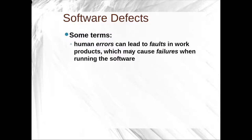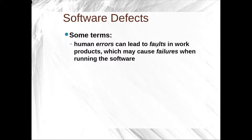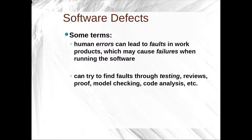Let's talk about software defects. Software defects can be described using many terms. Human errors can lead to faults in work products, which may cause failures when running the software. An error is something I make — it can lead to a deficiency, which can be a fault in the work I produce. This fault can induce failure. For example, an error could be assuming a variable is not null, leading to a fault where the assumption is unchecked, and when you call a method on it, it causes a failure. We can try to search for these faults through testing, reviews, proof, model checking, and code analysis.